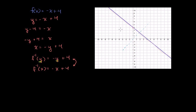Let's make sure that actually makes sense. For the standard function, if you input a 2, it gets mapped to a 2. If you input a 4, it gets mapped to 0. What happens if you go the other way? If you input a 2, 2 gets mapped to 2 either way, so that makes sense. For the regular function, 4 gets mapped to 0. For the inverse function, 0 gets mapped to 4. So it actually makes complete sense.